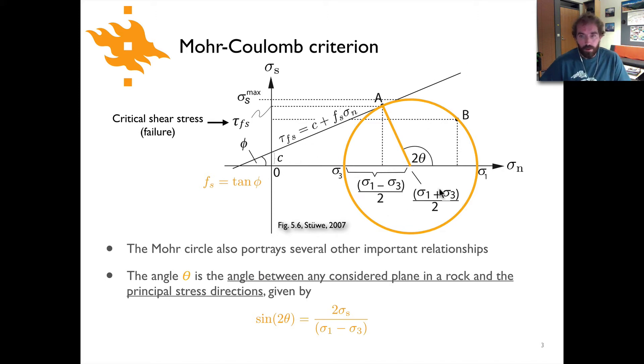And here the circle represents the state of stress in some rock where we have along the normal stress axis sigma 1 and sigma 3, the maximum and minimum principal stresses, and the circle then is going between those.